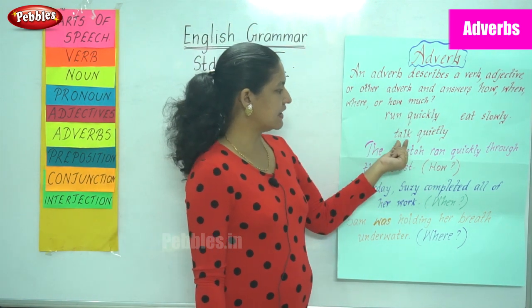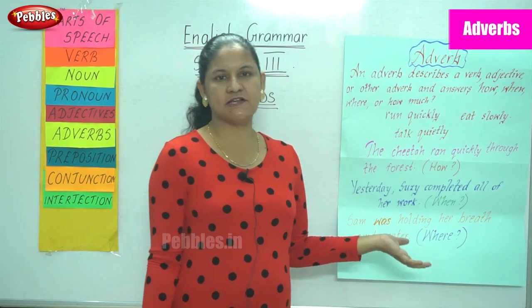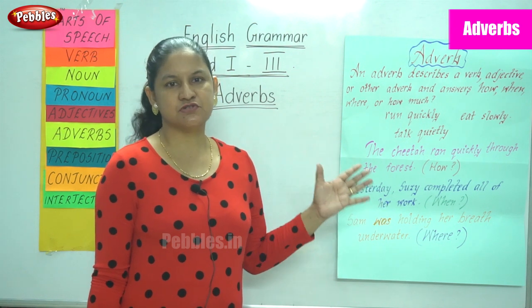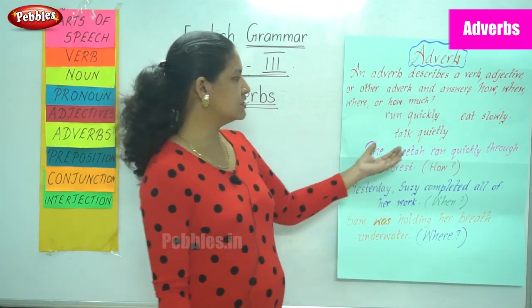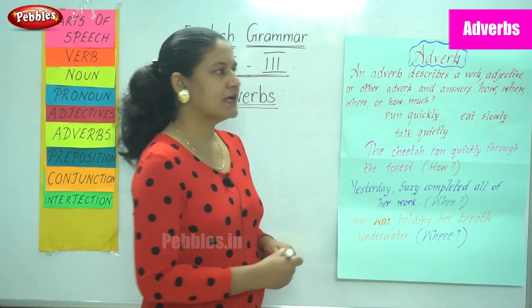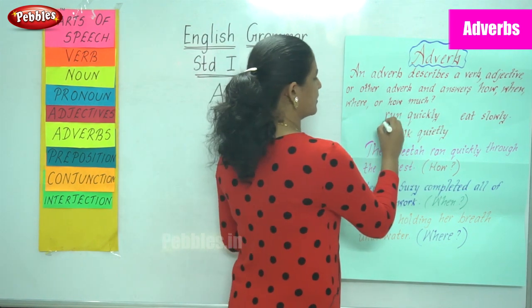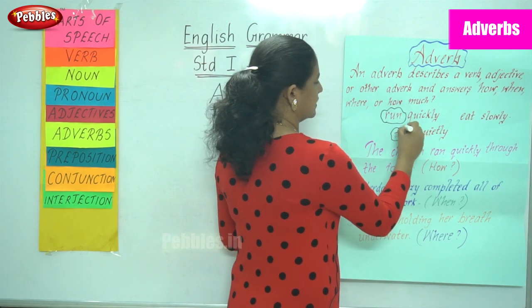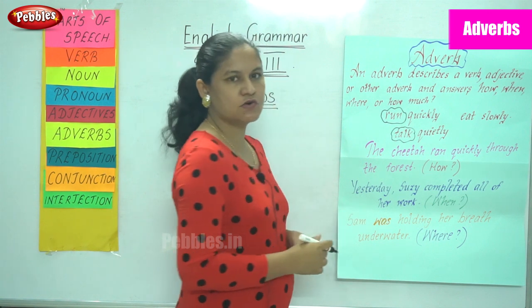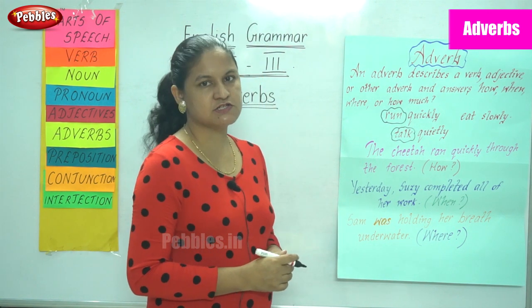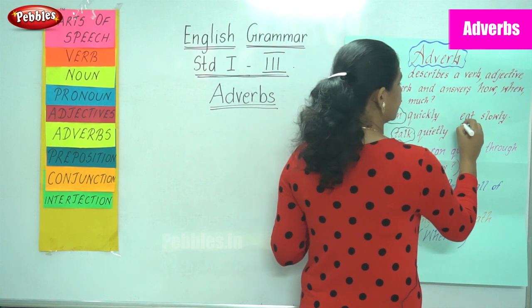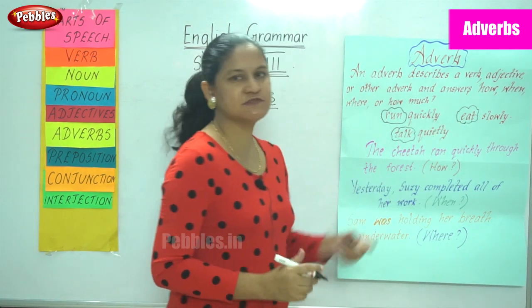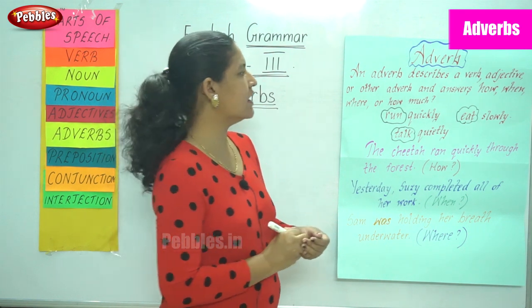The next example is 'talk quietly.' Again it describes the verb. How should he talk? He should talk quietly. Another example: 'eat slowly.' The children were asked to eat slowly. How are they supposed to eat? They are supposed to eat slowly. So the adverb describes the verb and answers the question how.